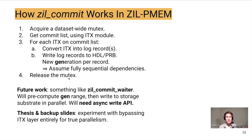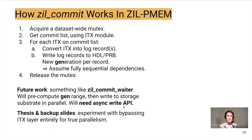For independent datasets, they only need to coordinate at the storage substrate level, which we've seen can be made very efficient. One possible improvement is to use ZIL commit waiters to get more parallelism by pre-computing generation ranges and having writers write in parallel. However, this requires some API changes and hasn't been done yet. The other thing explored in the thesis is bypassing the ITX layer completely to enable even more parallelism, though we don't have time to cover that here.